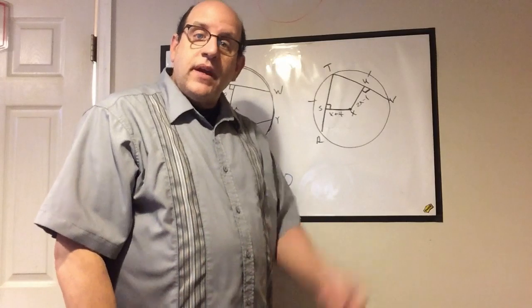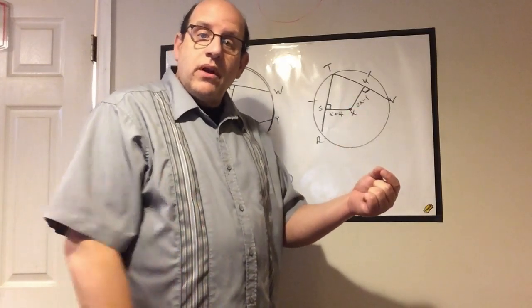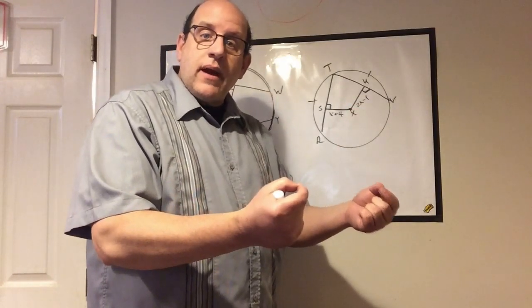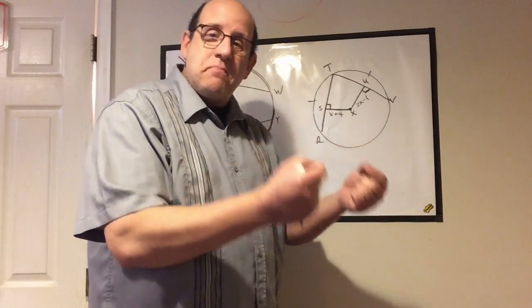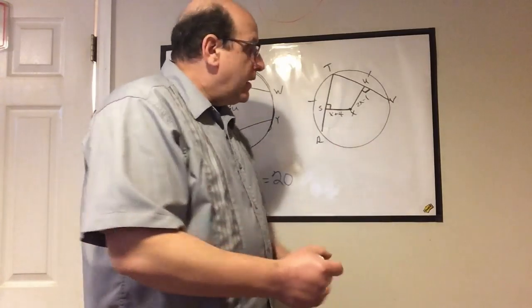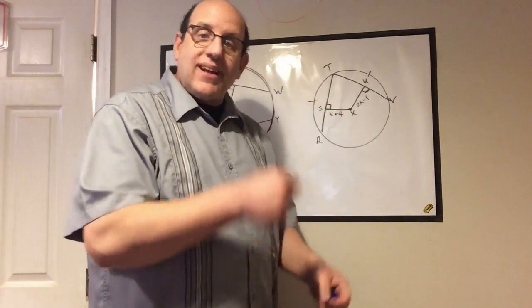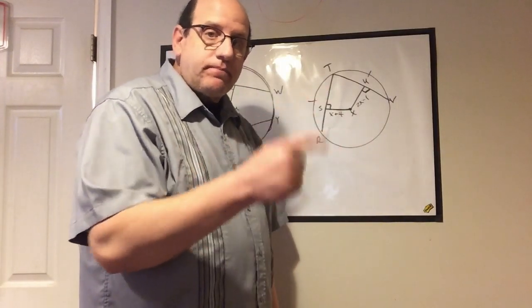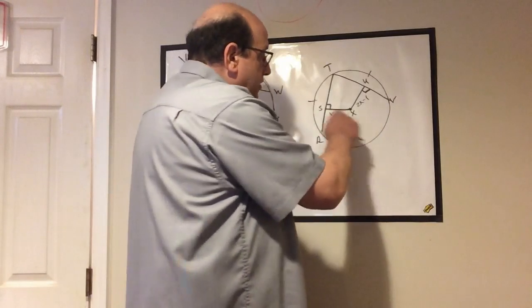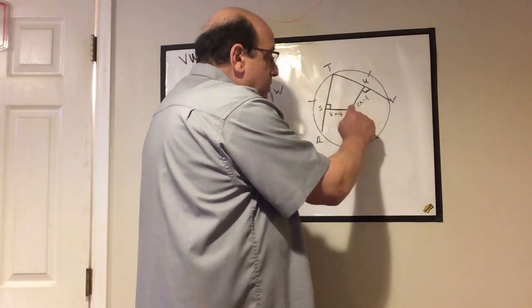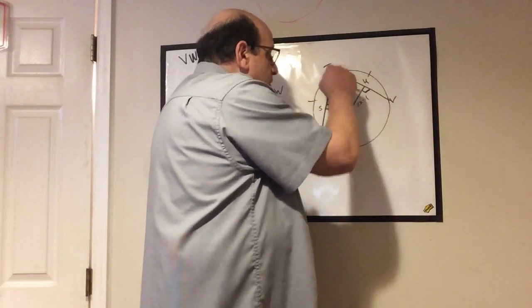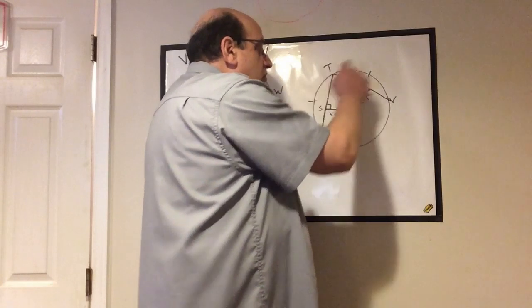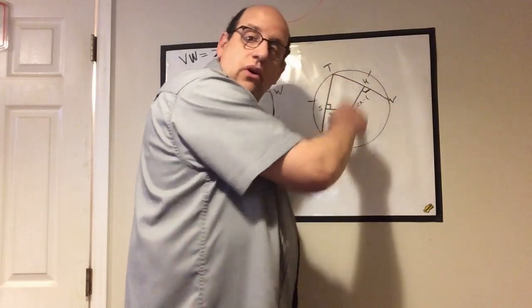Let me say it again. If the arcs are congruent, therefore the chords are congruent, and therefore the distance from the center of a perpendicular bisector has to be the same. If you want to rewind and figure that out, go ahead. I'm telling you that the distance from here to here is the same as the distance from here to there because of this congruence.